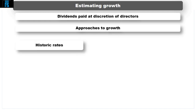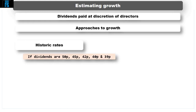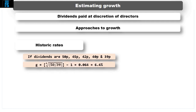1. Based on historic rates. If the latest dividend paid is 50p, and recent dividends have been 45p, 42p, 40p, and 39p four years ago, then the dividend has grown from 39p to 50p over the period. The average rate can then be estimated as the fourth root of 50 divided by 39, which gives 1.064. If you then subtract 1, you are left with 0.064 or 6.4%. It is assumed that this same rate of growth will continue moving forward, albeit this is another assumption whose validity can be questioned.